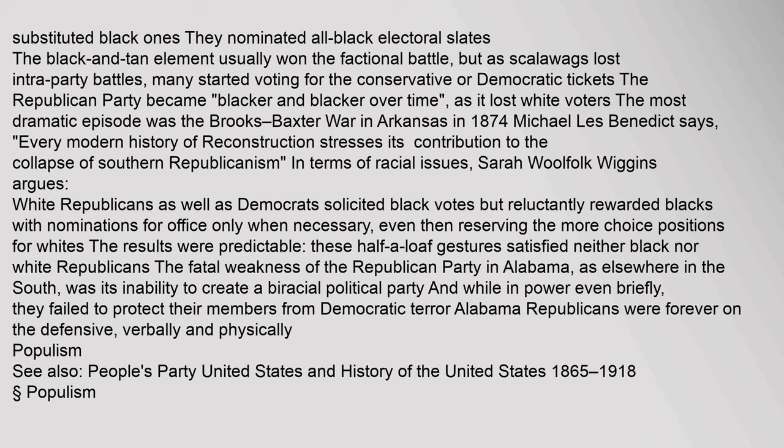Black laborers called white party leaders to account. They moved to control the county and district party machinery, rejected white office seekers and substituted black ones, and nominated all-black electoral slates. The black and tan element usually won the factional battle, but as scalawags lost intra-party battles, many started voting for the conservative or Democratic tickets. The Republican Party became blacker over time as it lost white voters. The most dramatic episode was the Brooks-Baxter War in Arkansas in 1874.